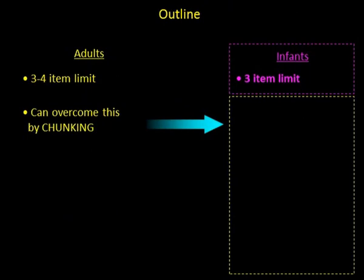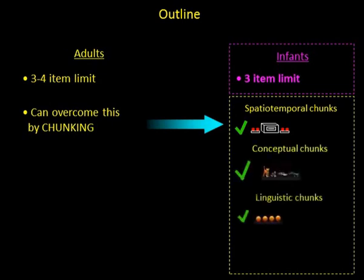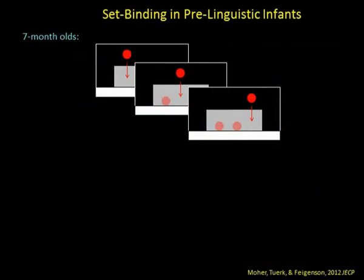The claim is that babies parse the scene first into left and right, then within each side into subsets based on space or kind, while still having access to the individual object representations contained in those sets. I think of this as three levels of representation in babies. So far, I've tried to align babies' object representations with adults' in terms of: the fundamental limit on individual objects, this binding or merge computation using spatiotemporal and conceptual information, and the ability to nest chunks within larger chunks.